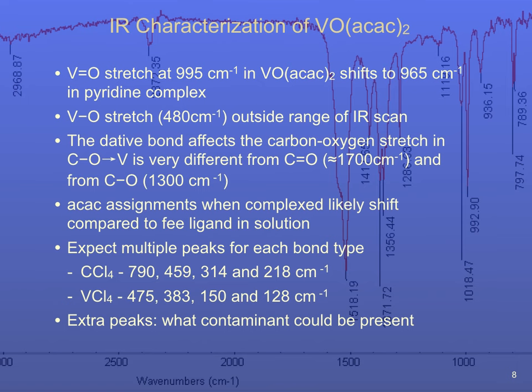Some points to consider when interpreting the VO-bis-ac-ac IR spectrum are emphasized here. The axial V=O absorption shifts when attaching a basic ligand to the sixth coordinating position. The free ac-ac ligand absorptions will be different from the corresponding absorptions found when it is complexed with vanadium in VO-bis-ac-ac. Some bonds in VO-bis-ac-ac will have multiple assignments. The presence of contaminants can add unanticipated peaks in your IR, and solvents are a typical source of these unwanted absorptions.